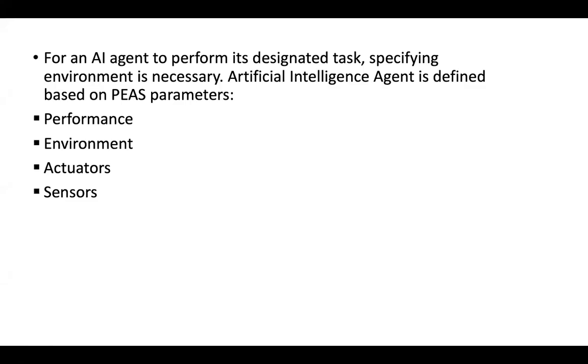For any AI agent to perform a certain task, we need to measure performance, have an environment properly defined for that agent, and know what the actuators are and what are the sensors. By now, you can understand that the agent itself has embedded sensors, actuators, and the performance is gauged based on the outcome of the decisions. Environment is still left unexplored, so let's go and see it.